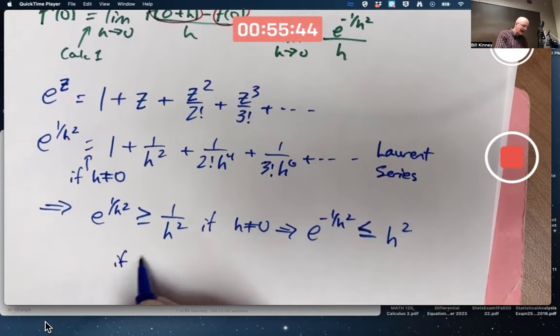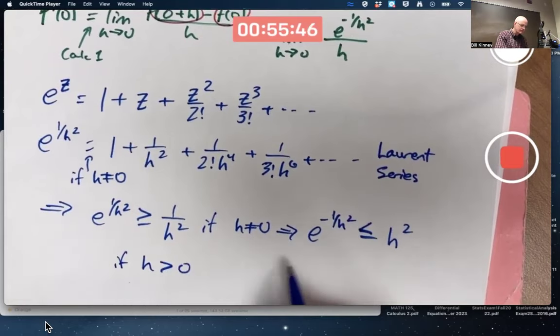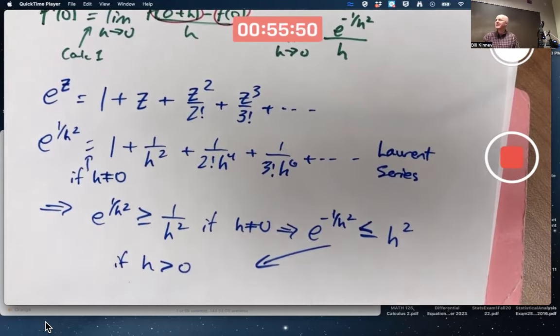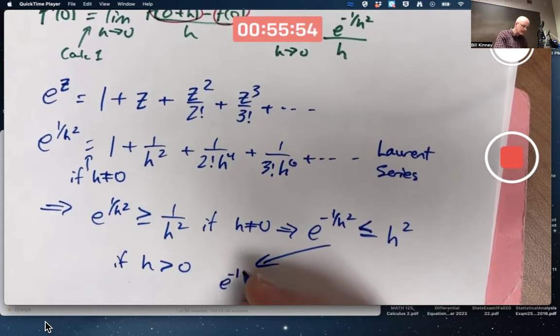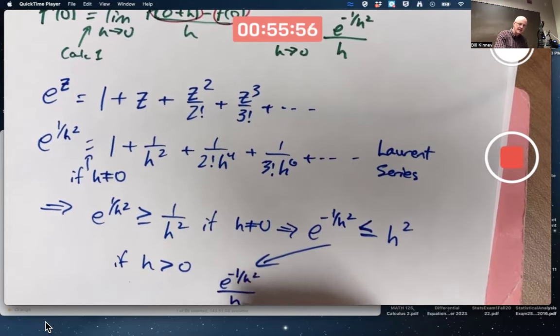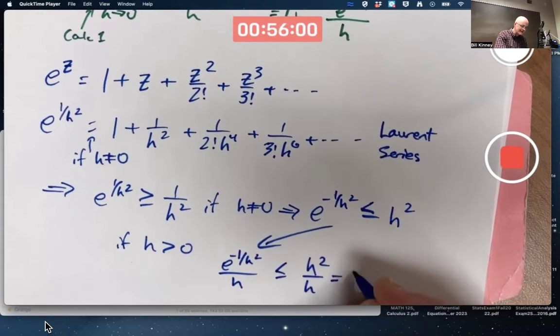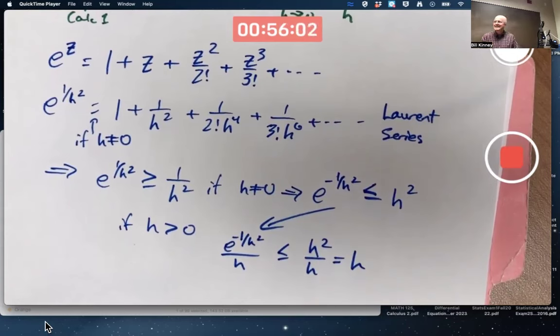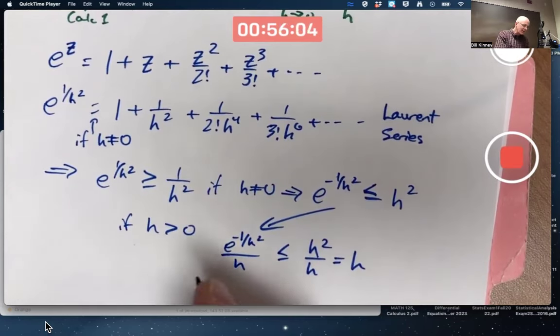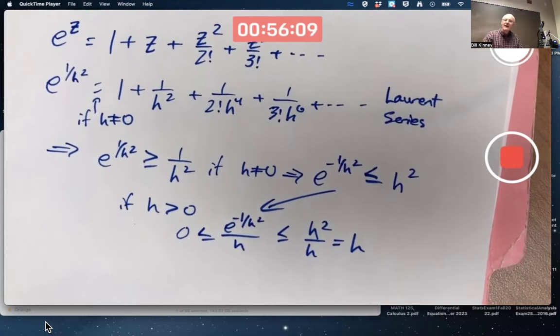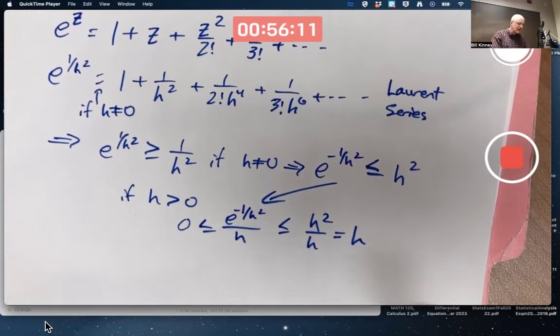And if h is positive, I can then divide both sides by h and keep the inequality in the same direction. And I can write e to the negative one over h squared divided by h is less than or equal to h squared over h, which simplifies to h. These quantities are also positive when h is positive. I can also write that.